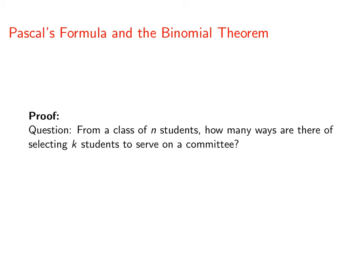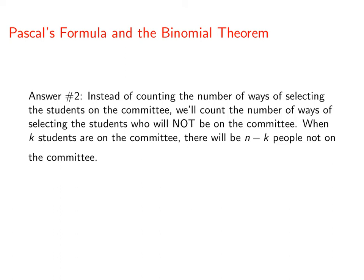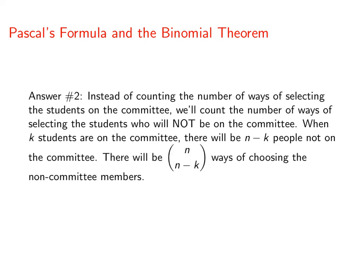Here's the proof. Take a class of n students and choose a committee of k students. How many ways are there of doing that? Our first answer: it's simply n choose k, by definition. For our second answer, we take a different perspective — instead of counting the ways of selecting the students on the committee, let's count the ways of selecting the students who will not be on the committee. If there are k students on the committee, there will be n minus k people not on it, giving n choose n minus k ways of choosing the non-committee members. Choosing a committee is just as good done by selecting the committee members as by selecting the non-committee members. Therefore, n choose k equals n choose n minus k.